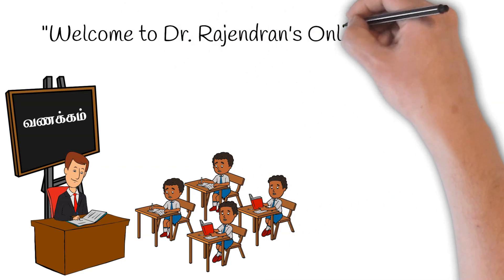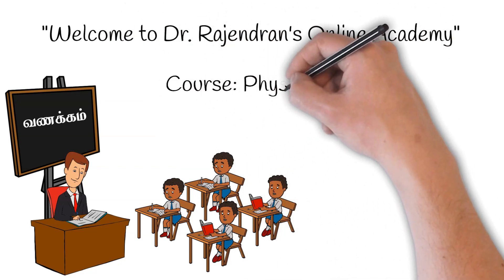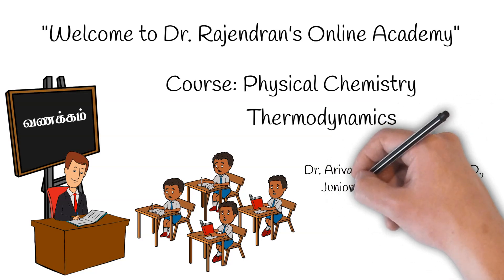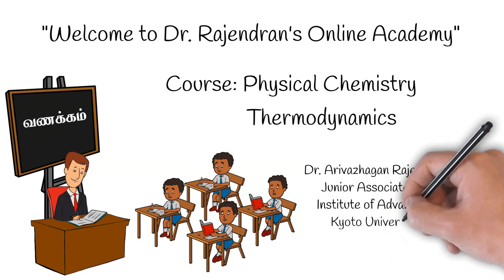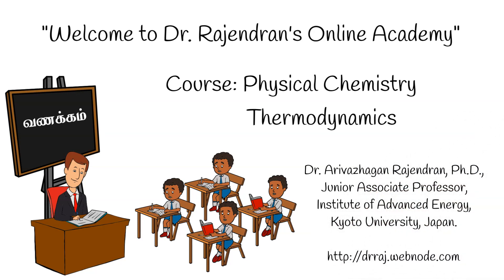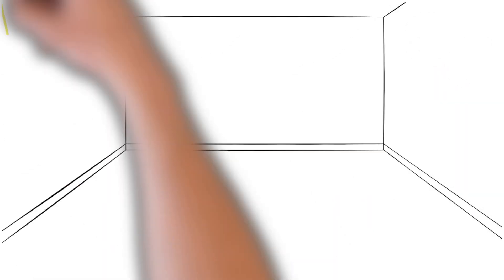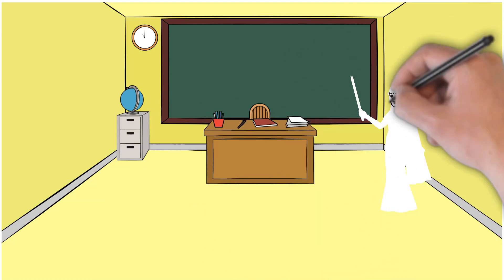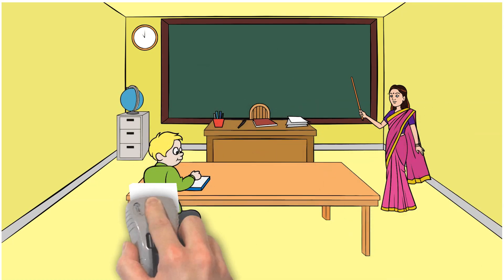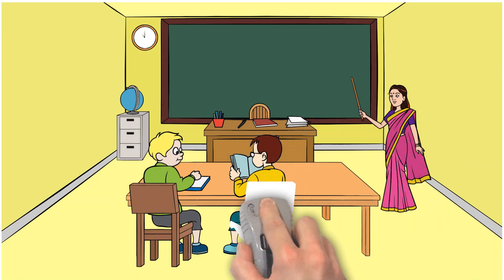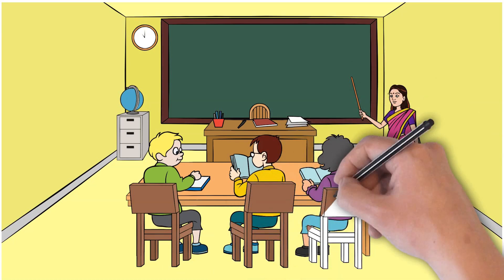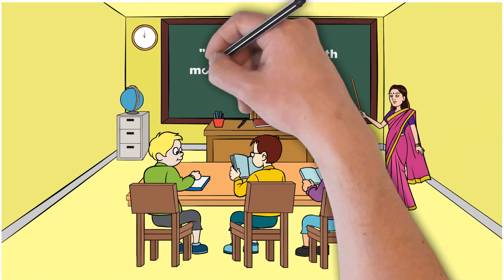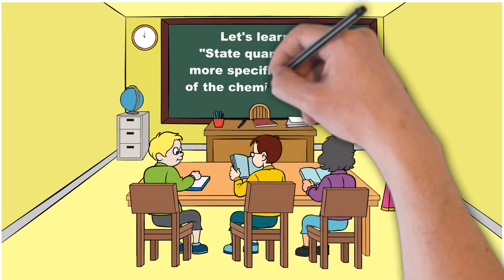Welcome to Dr. Rajendran's Online Academy. The course title is Physical Chemistry, and the specific topic is Thermodynamics. In this class, we are going to learn more details about the state quantity. Hello students! Are you ready? Let's learn the state quantity with more specific examples of chemical systems.